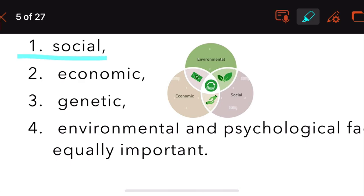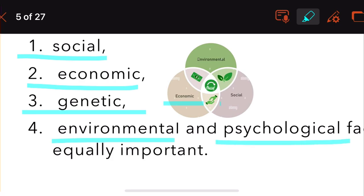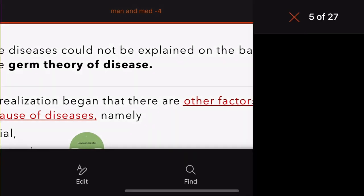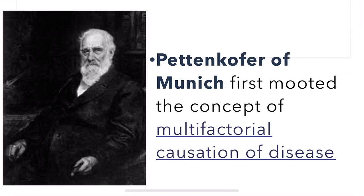Then came the realization that other factors can also play a role in the causation of diseases. The multi-factors are social, economic, genetic, environmental, and psychological. These factors all play an equal role in disease causation. Pettenkofer of Munich first mooted this concept of multi-factorial causation of disease — this can be an MCQ: who first mooted the concept of multi-factorial causation of diseases? It was Pettenkofer of Munich.